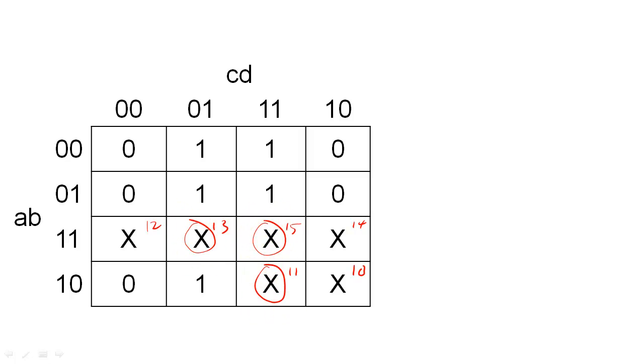Because we don't care, we can treat each of these don't cares as a 1 or a 0, whichever is more useful for us. So, for example, we could treat these middle three Xs as 1s and create a minimal expression with only one product term.